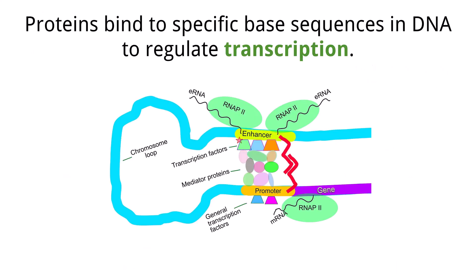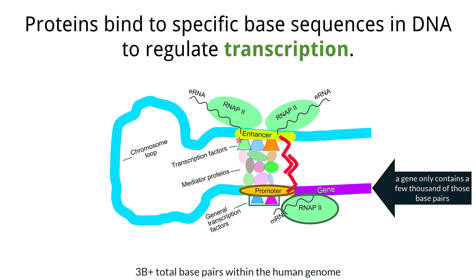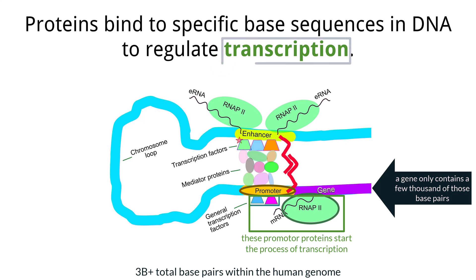The human genome consists of over 3 billion base pairs, but a gene is only a few hundred or a few thousand base pairs. So how does the cell only copy the part of the genome that it needs? Upstream, or in front of the gene, is the promoter region — a sequence of DNA that is the starting point. RNA polymerase is the enzyme that attaches to the promoter region, along with transcription factors, and is in charge of transcription. Promoter proteins are an example of transcription factors that tell RNA polymerase to attach to the DNA and begin transcription. RNA polymerase then moves down the gene, making mRNA.